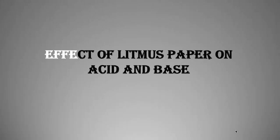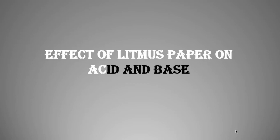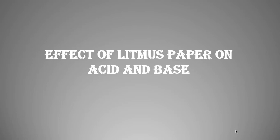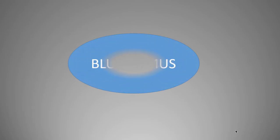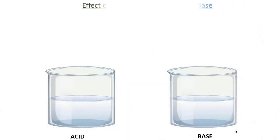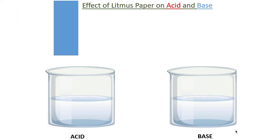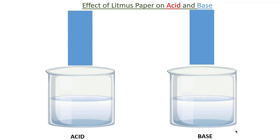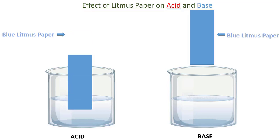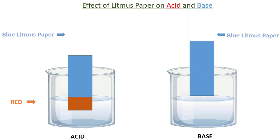Let's analyze the effect of litmus paper on acid and base. First, we will consider the blue litmus paper. There are two beakers containing acid and base solutions. We will dip the blue litmus paper in the acid solution first — the part of the litmus paper is being changed into red. Similarly, in the base solution, the color of the litmus paper remains unchanged.